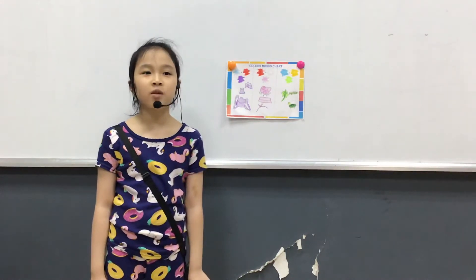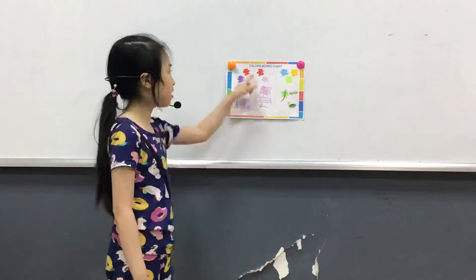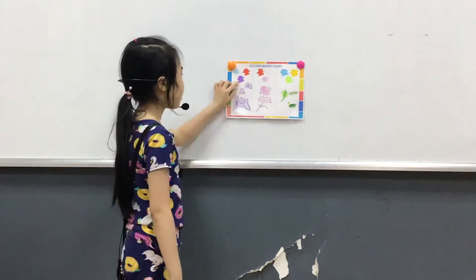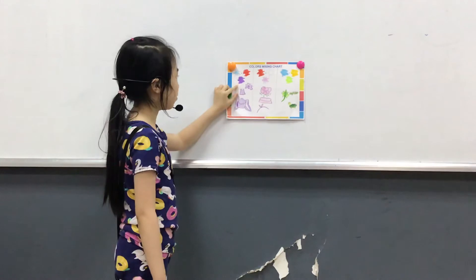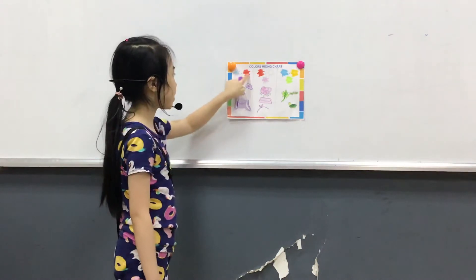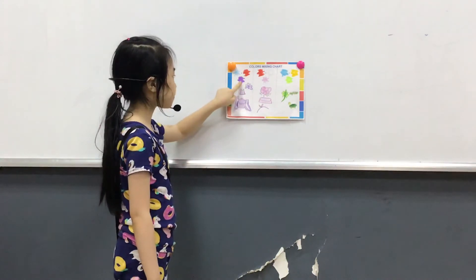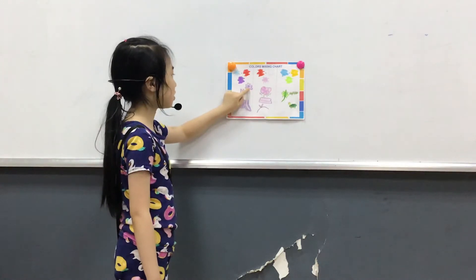Today I'm going to tell you about my color mixing chart. My first color is purple. I mix blue and red to get purple. Purple is a secondary color.